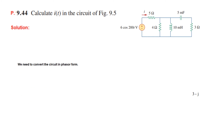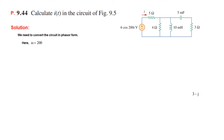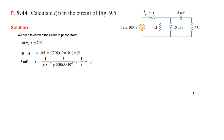To convert into phasor form we need omega. From the source, cos(omega t), omega is 200. From theory, inductance in phasor form becomes j*omega*L. Plugging in omega and L, we get j2.